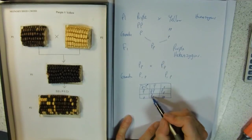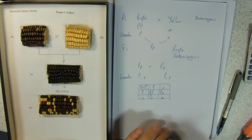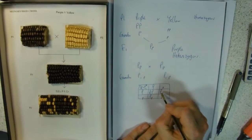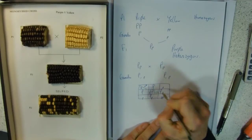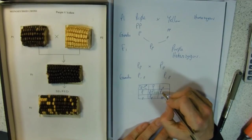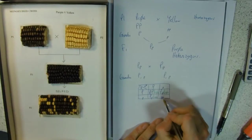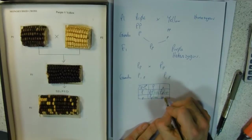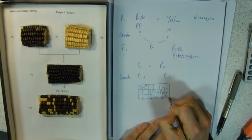Traditionally we put the big letter first. These are our genotypes. What are our phenotypes? Purple - anything that's got that dominant allele - purple and purple. The recessive has to be homozygous for it to be expressed, and that's going to be our yellow.